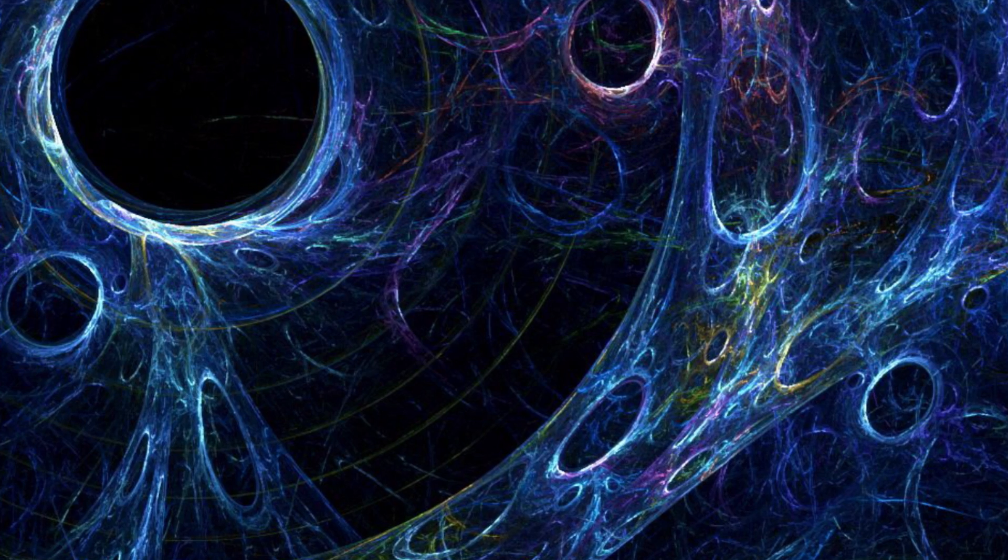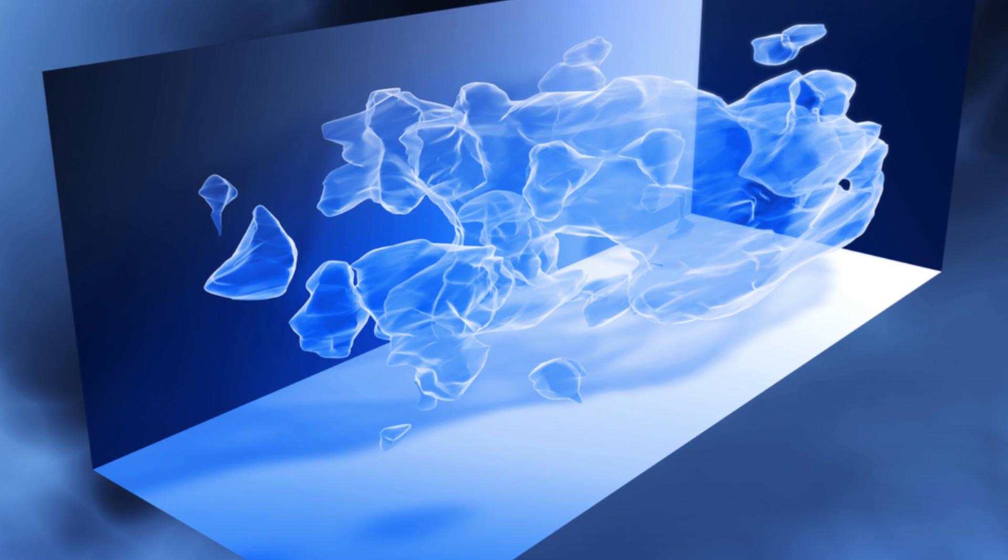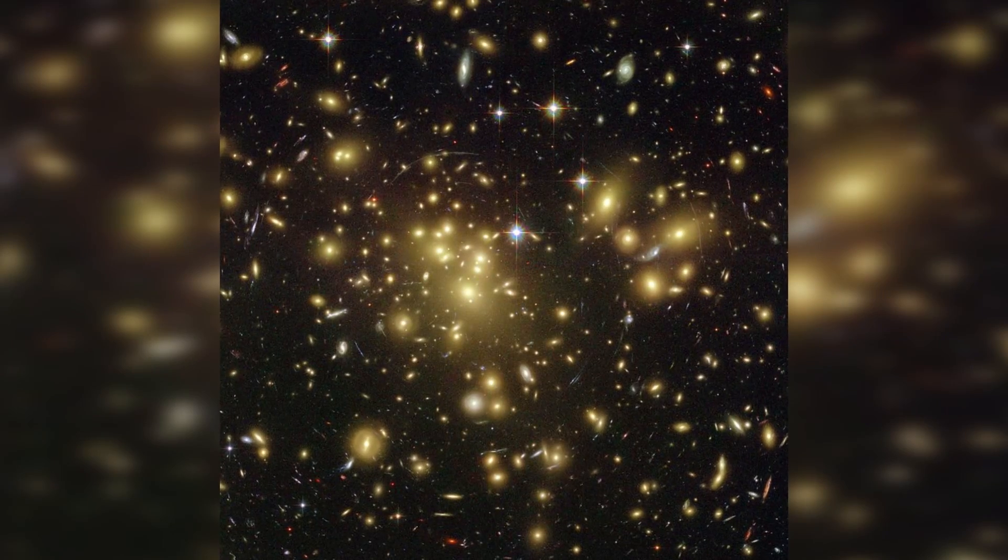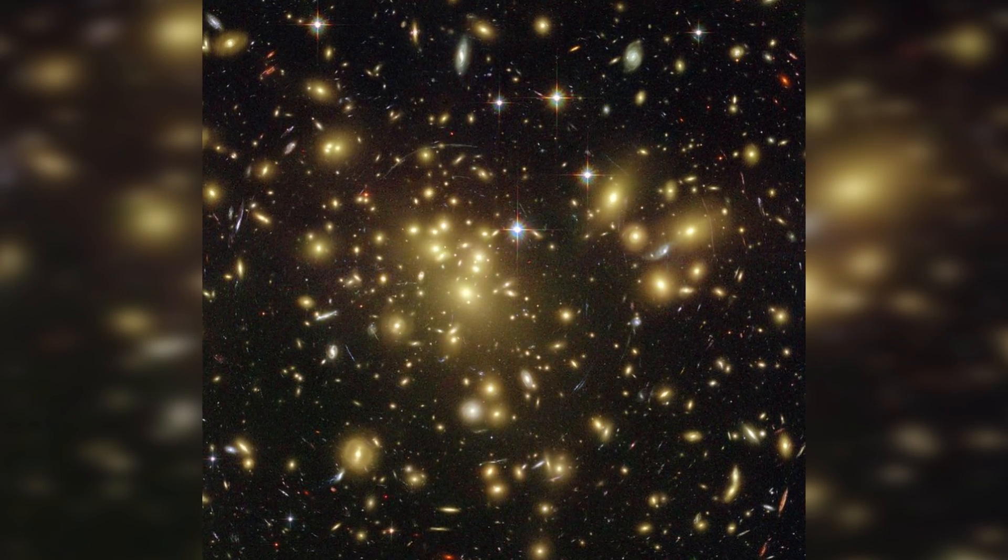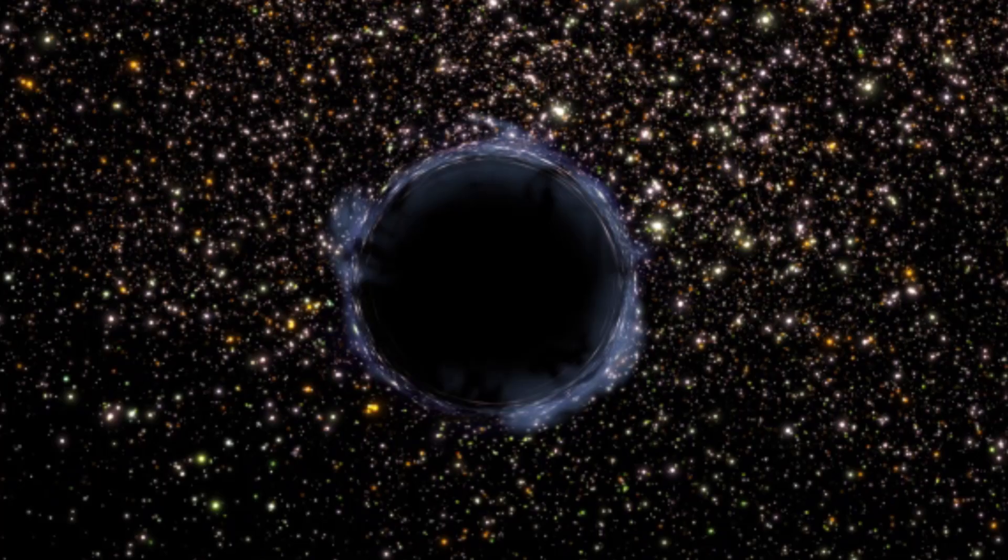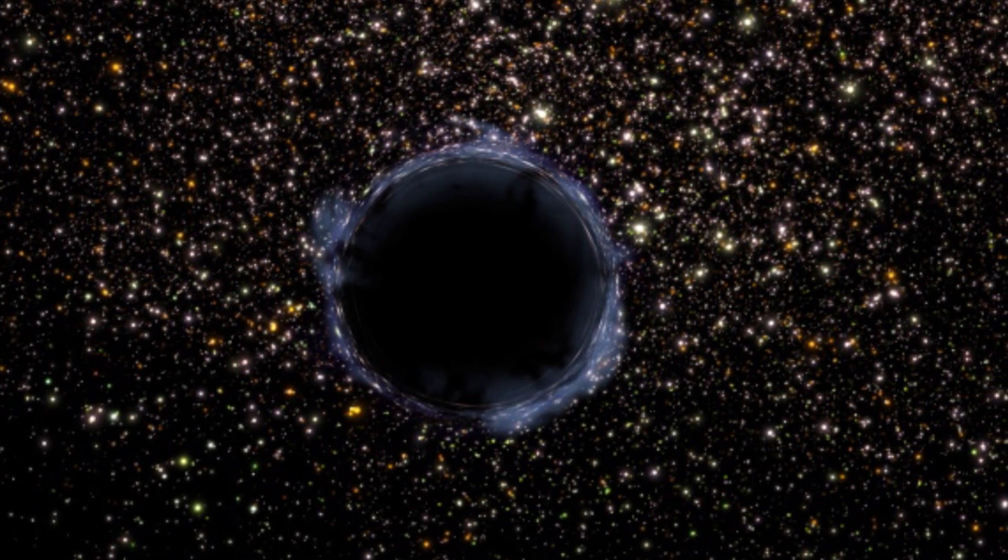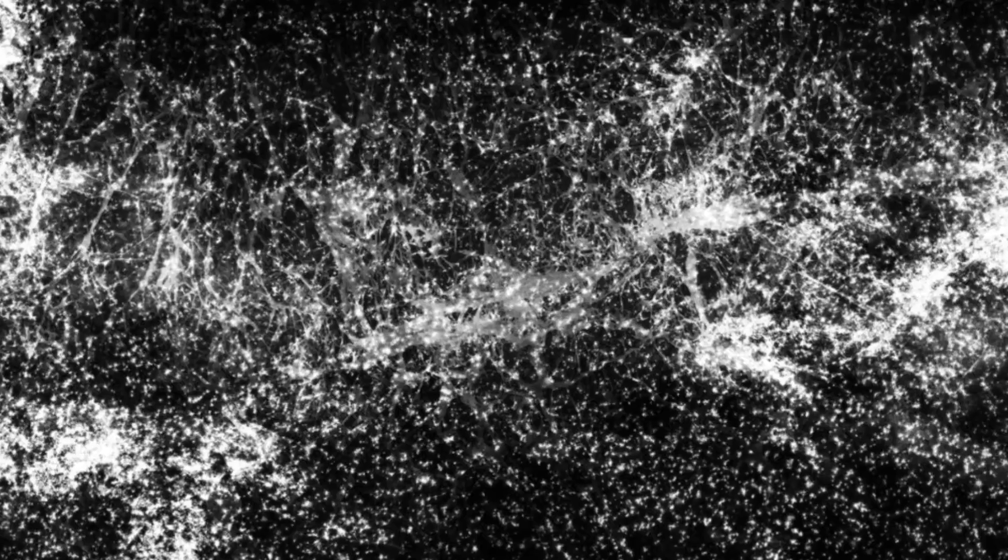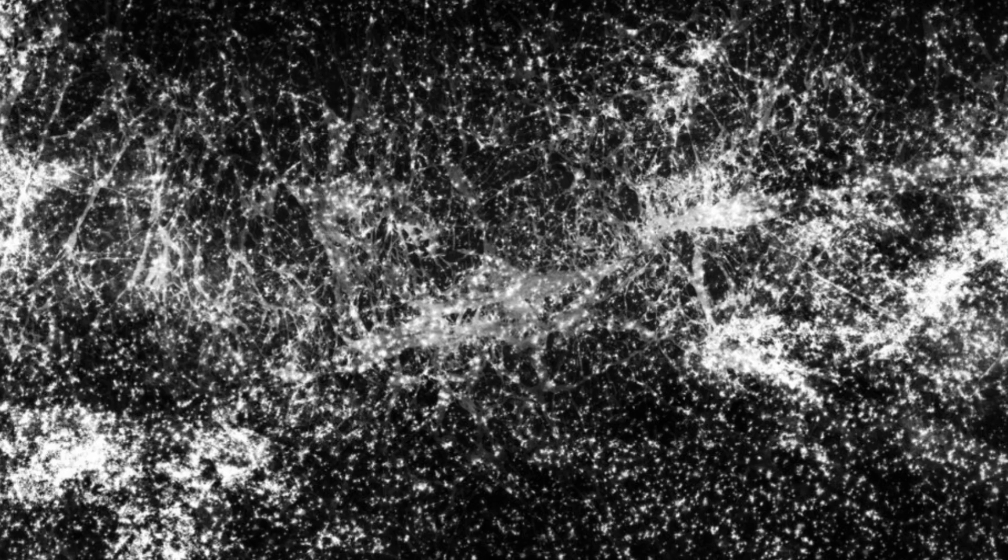Though much of the scientific community agrees it exists, scientists have not observed dark matter directly. Well, not exactly, but I'll get to that later. Understandably, it's pretty difficult to observe something that doesn't interact with light, or baryonic matter, or radiation. So how do scientists know dark matter is there if we haven't been able to detect it?